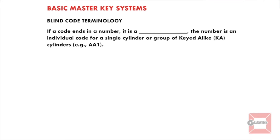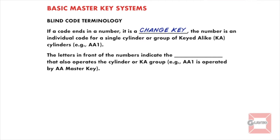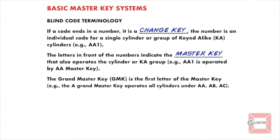If a blind code ends in a number, it's a change key. The number is an individual code for a single cylinder or group of key-to-like cylinders. The letters in front of the numbers indicate the master key that also operates the cylinder or key-to-like group. The grand master key is the first letter of the master key. So the A grand master key operates all the cylinders under the master keys AA, AB, AC, etc.